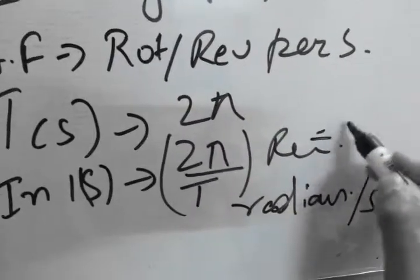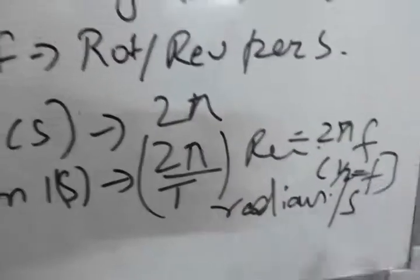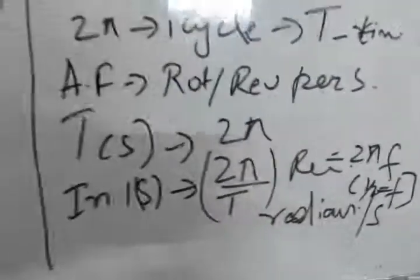2π by T equals 2π f, that is, 1 by T equals f. Thanks for viewing this video, goodbye.